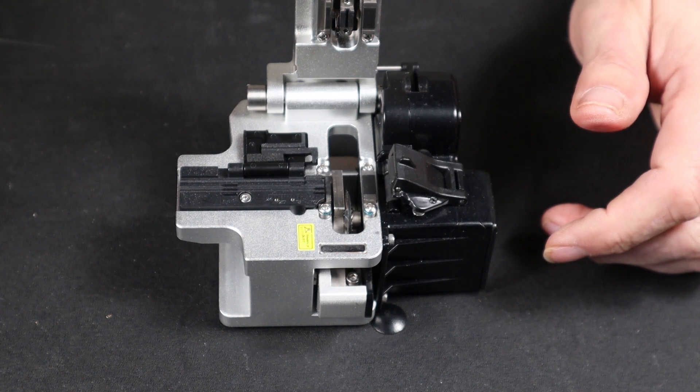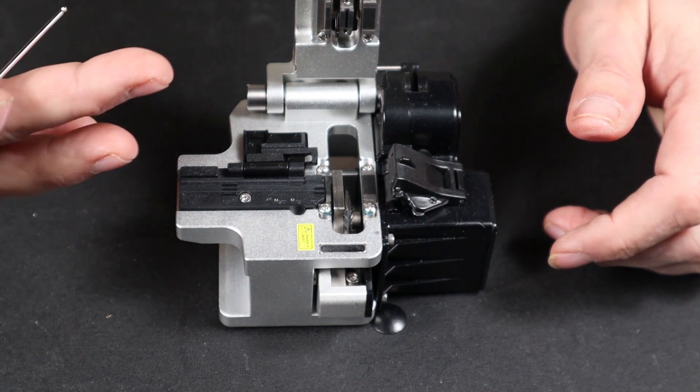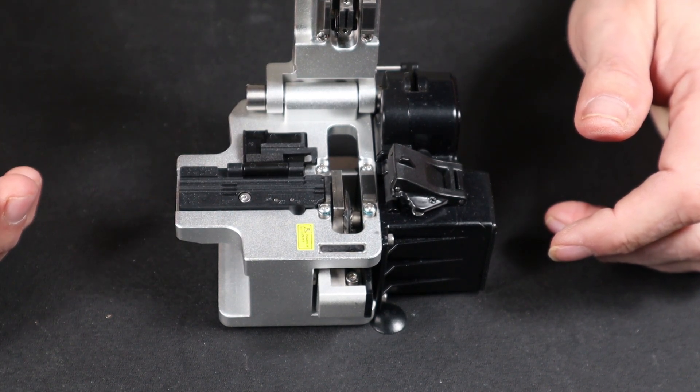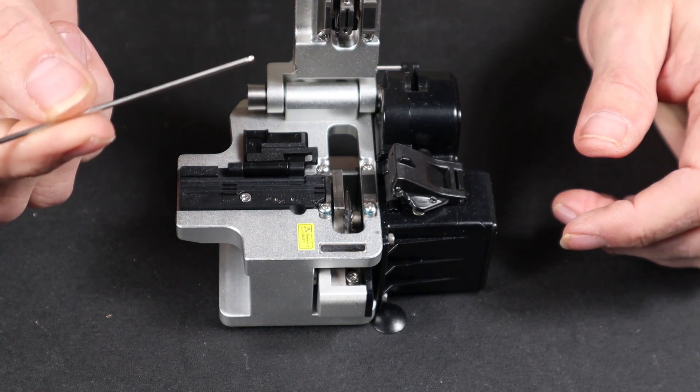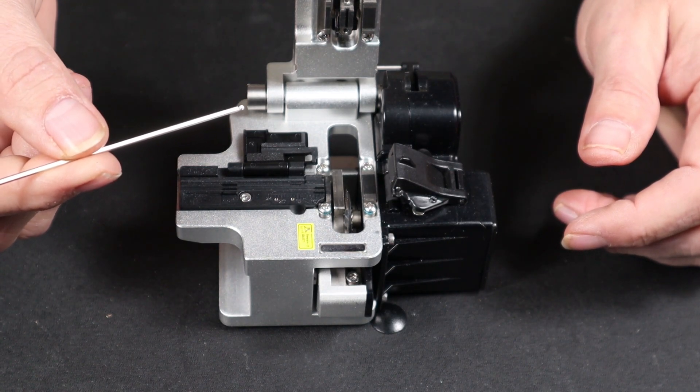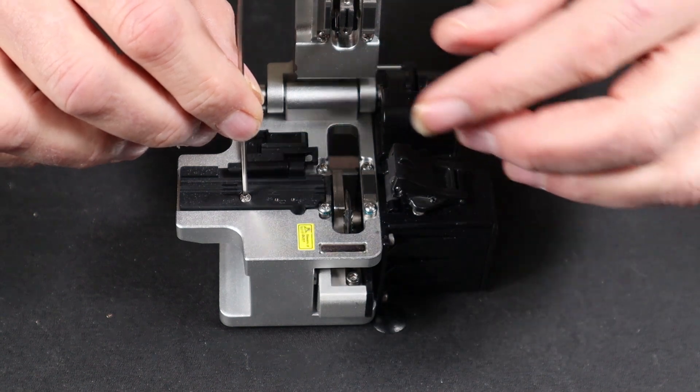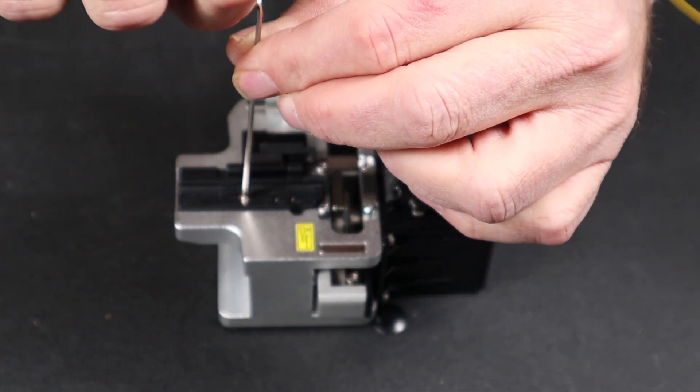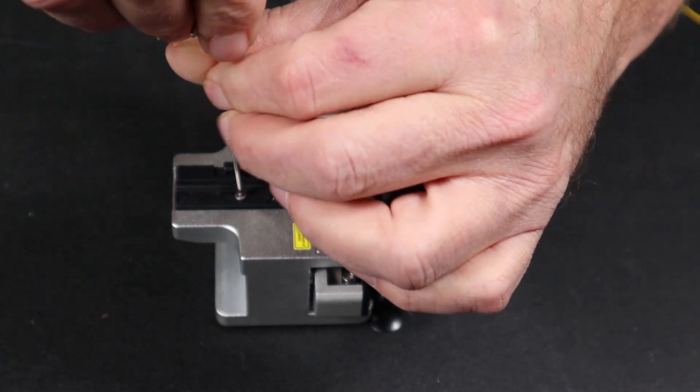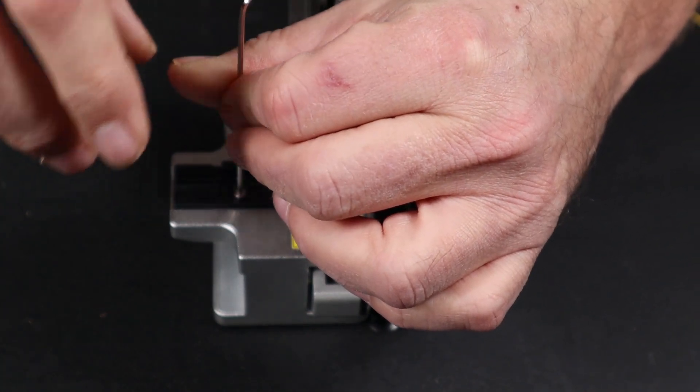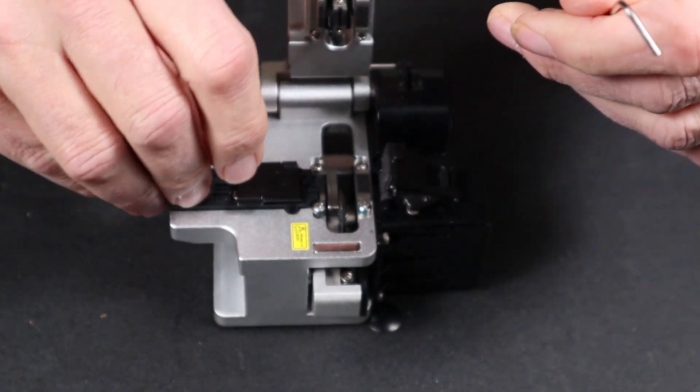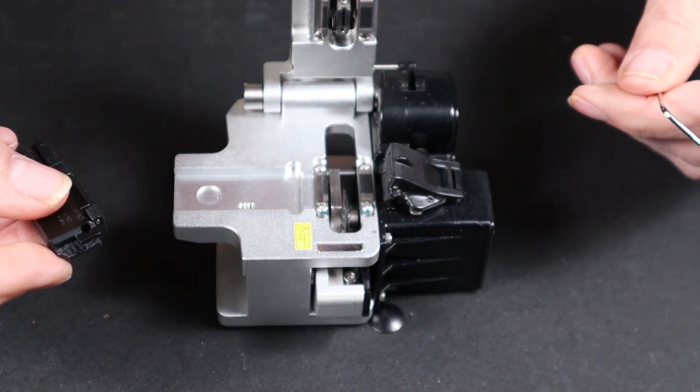To prepare your cleaver for a movable holder, you need to remove the fixed holder. To do this, use the Allen key that was provided in your cleaver case. Remove the screw. Close your lid. Remove your holder.